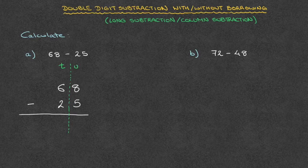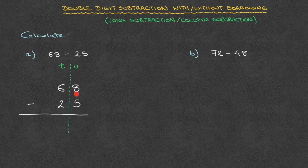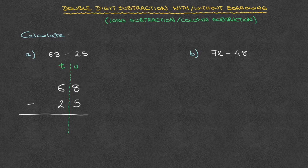When working through this, we start with the units, and then we'll take care of the tens. So in the units column, we have 8 minus 5, and 8 minus 5 is 3. We write that at the bottom of the units column, right here.